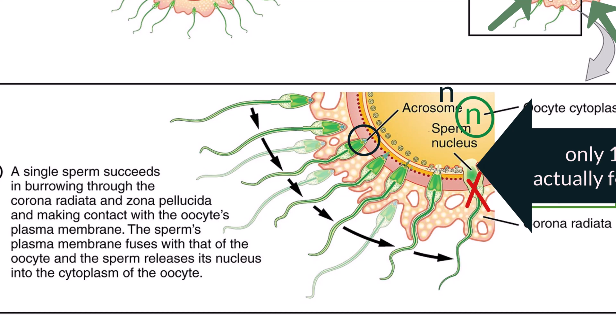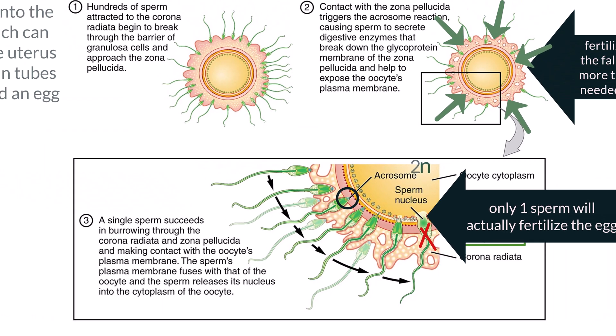The haploid nuclei of both the sperm and egg are now inside the egg, and chromosomes remain separate for a time while membranes form around each — these are called pronuclei. The DNA will undergo replication in preparation for mitosis. The two pronuclei come together and the temporary membranes dissolve. It takes about 30 hours after fertilization for the first mitotic cell division to occur. By the end of day 3, 16 cells will have formed.